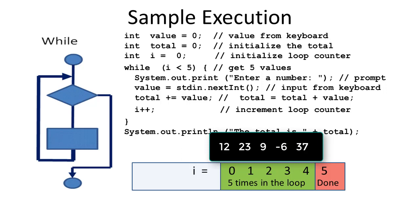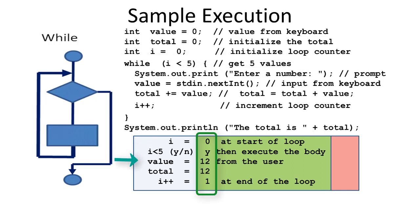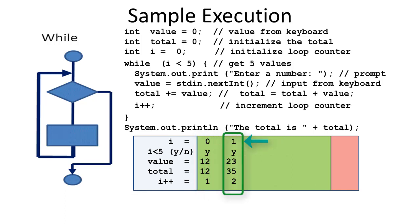Let's look closely at what happens as the program progresses. The initial state of the total is 0 and i is 0. Since 0 is less than 5, the body of the loop is executed. A 12 is read from the keyboard and added to the total, which becomes 12. Then i is incremented using i++, causing i to become 1. When starting the second pass, i is 1 which is less than 5, so the body of the loop is executed again. This time, suppose we read a 23 from the keyboard, so the total becomes 35. Then i is incremented and becomes 2.